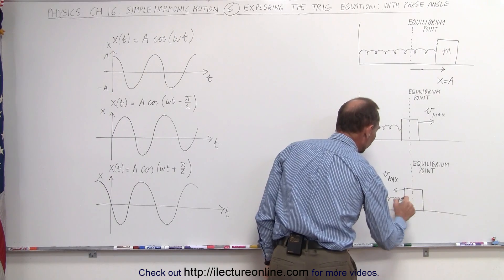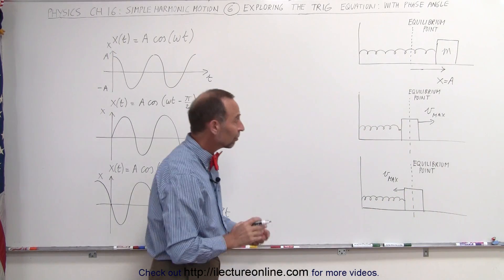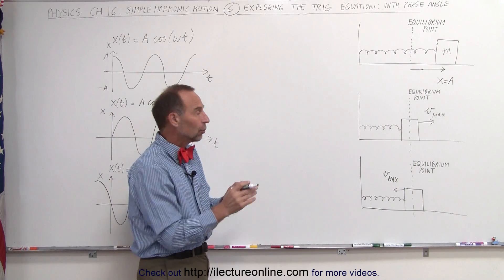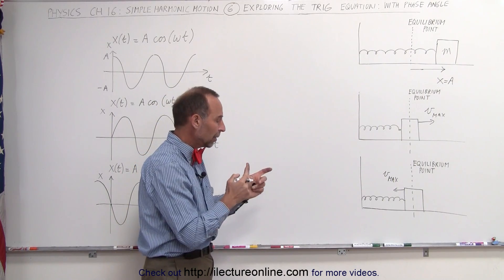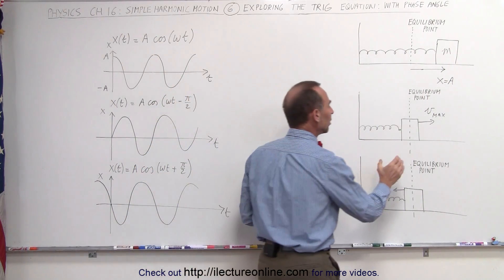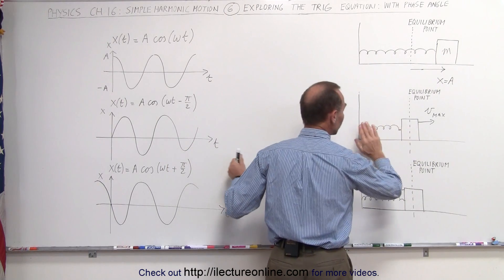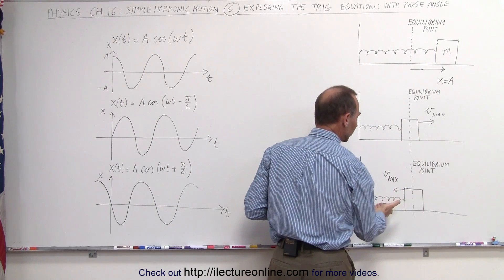And the spring would be, at that moment, also not be pushing or pulling against the block. At the equilibrium point, there's no net force acting on the block. All the energy is kinetic energy. This is the case where the block is moving to the right. This is the case where the block is moving to the left.